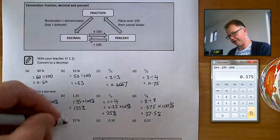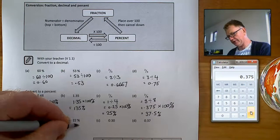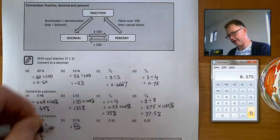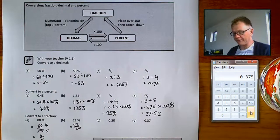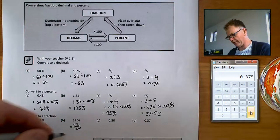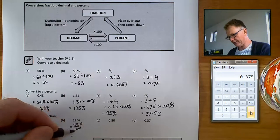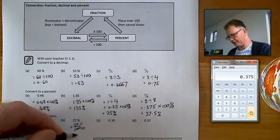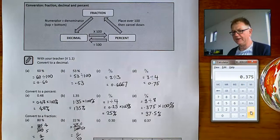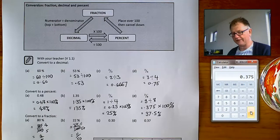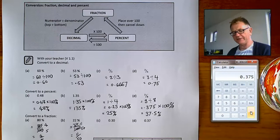22% as a fraction can be written as 22 out of 100. We can simplify it: 2 divides into 22 giving 11, and into 100 giving 50, so 22% equals 11/50 in its simplest form. It's important to remember that 22 out of 100 is a correct answer, but 11 over 50 is the better simplified form.